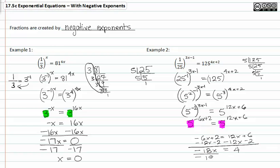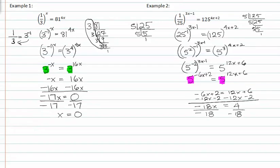Dividing both sides by negative 18 gives me x is equal to negative 2 ninths.